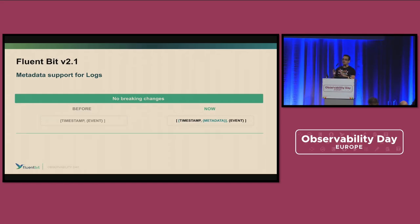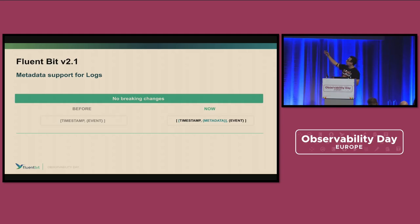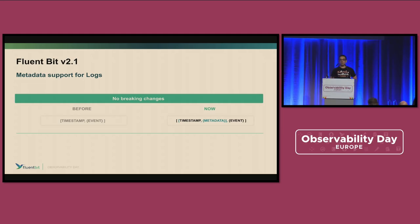In FluentBit, until version 2.0, we didn't support the concept of metadata in logs. Usually, people tend to put the metadata inside the log — for example, Kubernetes labels and Kubernetes annotations. We have adapted the schema in order to also support OpenTelemetry, because OpenTelemetry payload separates metadata from content. Previously we supported a timestamp and event; now we have timestamp plus metadata plus the event. This change doesn't add any breaking changes — it's pretty smooth for all your environments. If you're not using metadata in logs, that's fine; if you are, now you have full support for that.